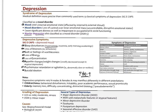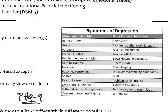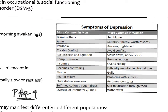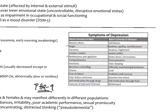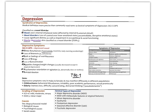Depressive symptoms tend to vary between males and females. In males, there's more anger and irritation, whereas in females there tends to be more sadness, apathy, feelings of worthlessness, and self-blame. Males present with more restlessness and agitation, while females show more slowness and nervousness. Depression is not always going to present the same in males and females.